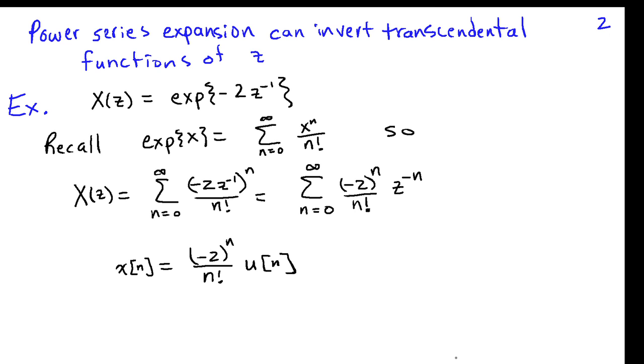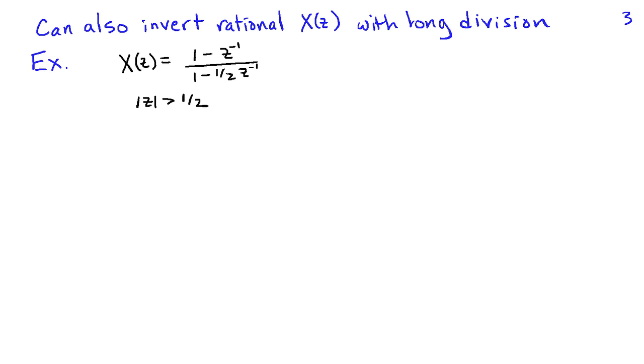You can invert them by using the power series expansion for the particular function at hand. The power series expansion approach can also be used to invert rational Z transforms by using long division.